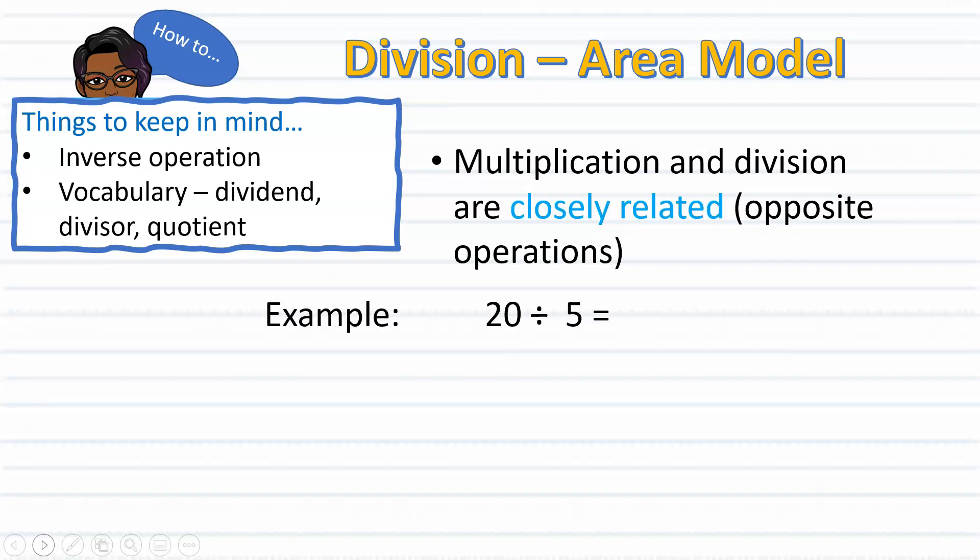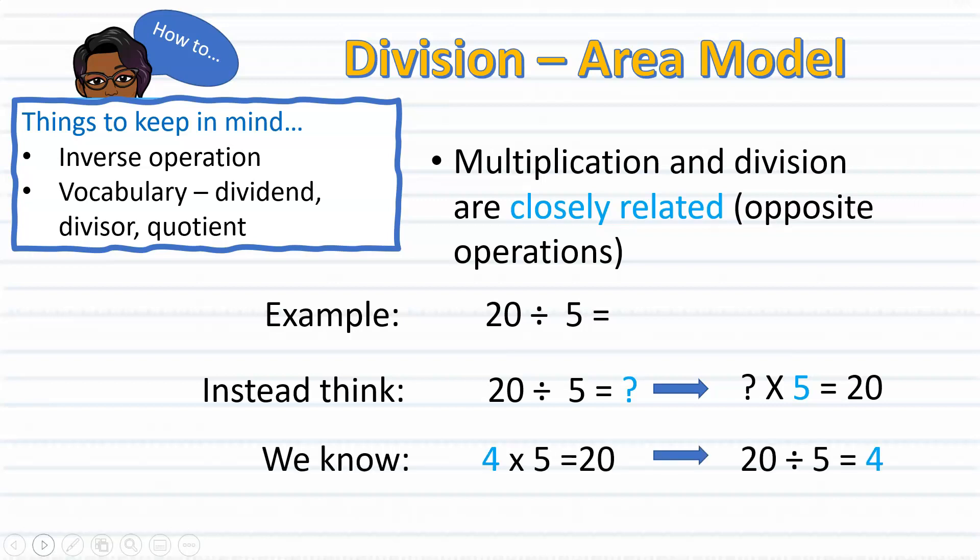For example, say we are trying to find the quotient of 20 divided by 5. We could use inverse operation to solve for it. So instead, you can think to yourself, what number times 5 equals 20? Since we know that 4 times 5 equals 20, then we know that 20 divided by 5 equals 4.